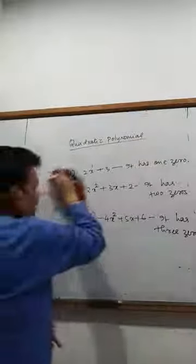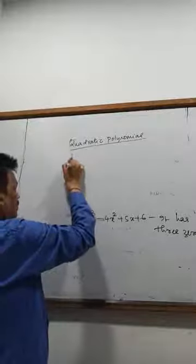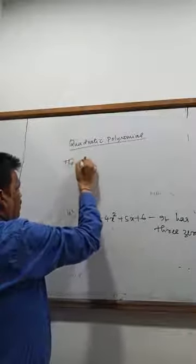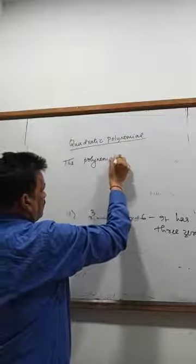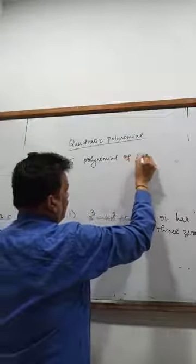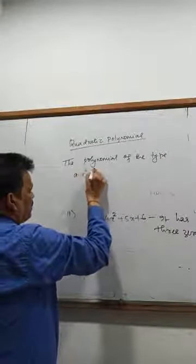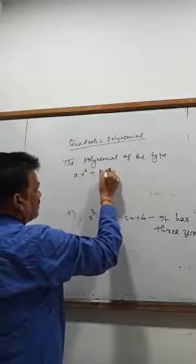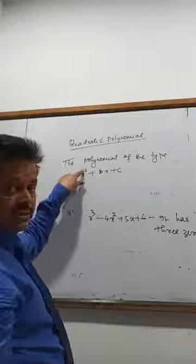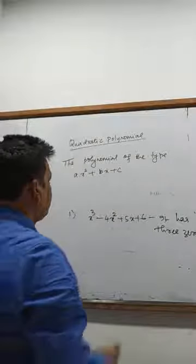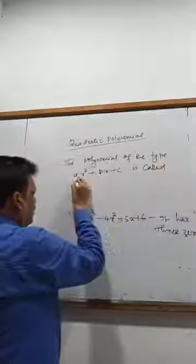Quadratic polynomial means the polynomial ax square plus bx plus c, where the highest degree is 2, which is not a fraction and not negative. This is called a quadratic polynomial.